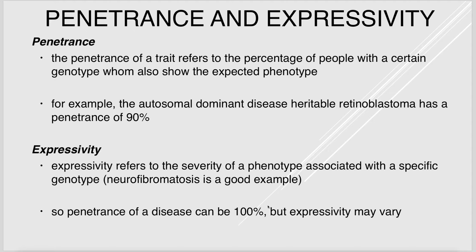Penetrance is given as a percentage — the percentage of people with a specific genotype who also show the phenotype. For example, heritable retinoblastoma has a penetrance of 90%, meaning if 10 children had the genotype, only 9 would get the disease. Expressivity refers to the severity of the phenotype — as with neurofibromatosis, everyone may show the disease but with different severities.